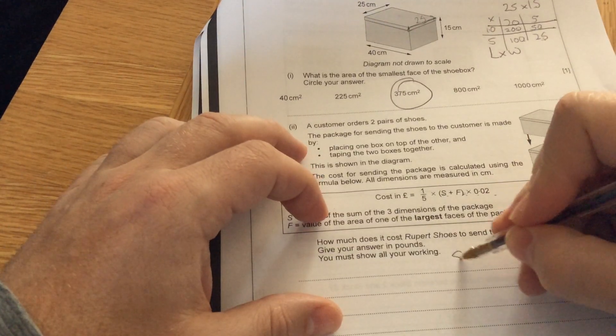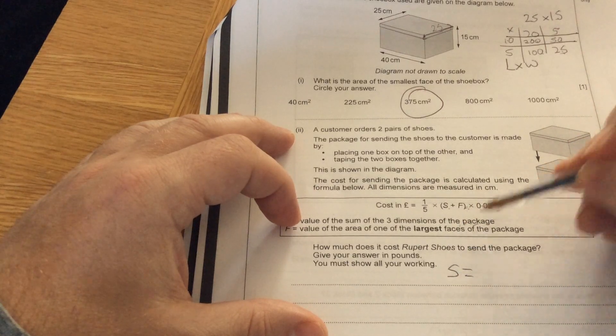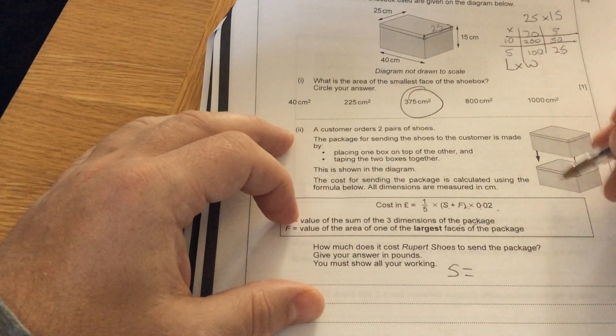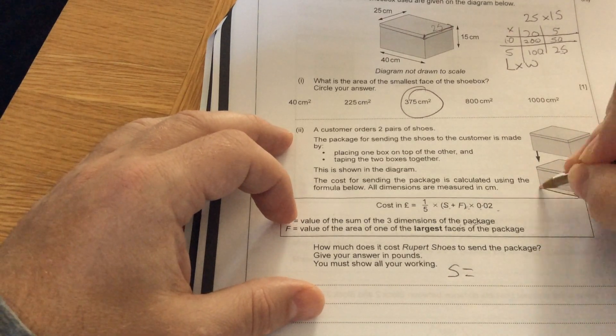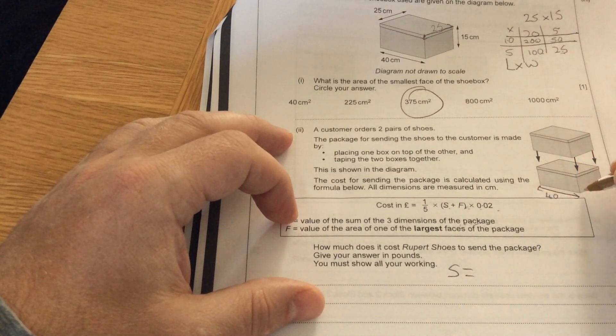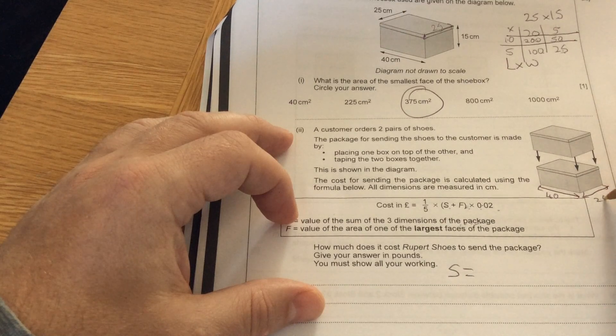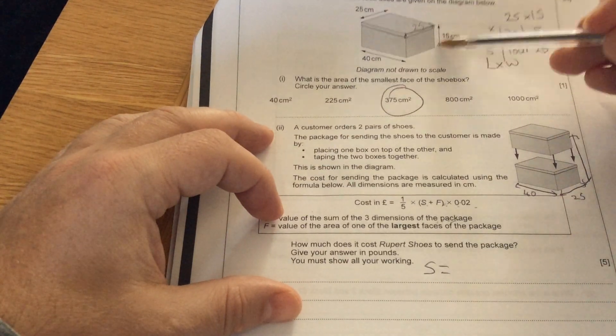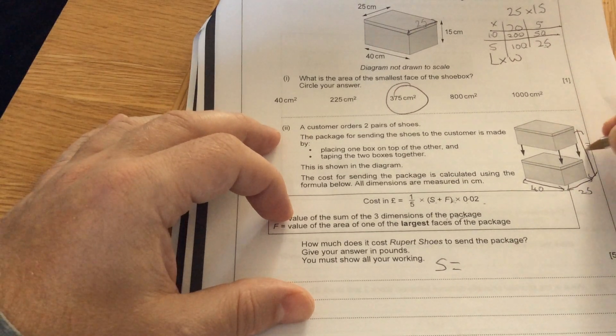S is the value of the sum of the three dimensions of the package. If I'm putting the two together, this dimension stays the same as 40. This dimension stays as 25. Because I'm putting the two together, the original one was 15, so that now becomes 30.